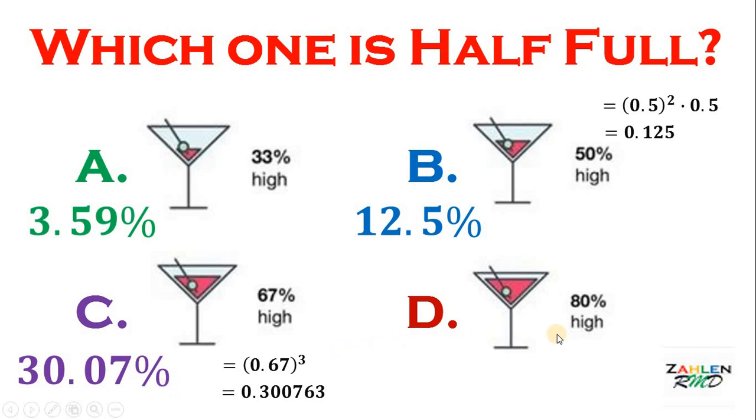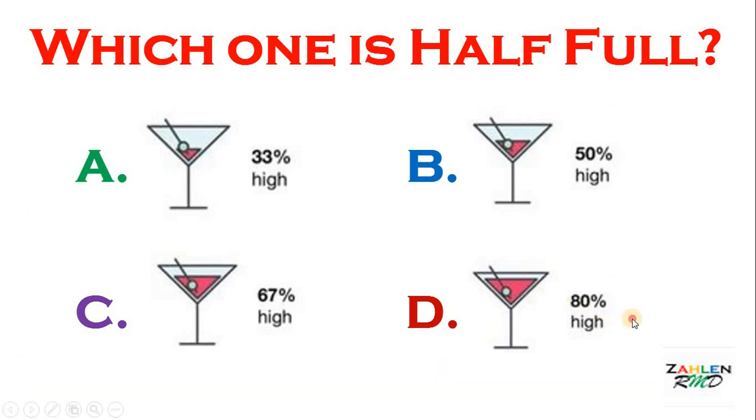Letter D, we have 80% high. Now let's see. How many percent is this 80% high? So we have 0.8 cubed or simply 0.8 squared times 0.8. Simplify and we get 0.512 or simply 51.2%. It follows that letter D is the correct answer and it is half full. Therefore, the correct answer is letter D and we're done.